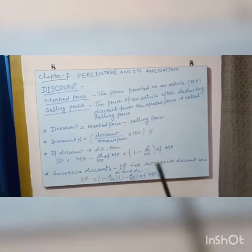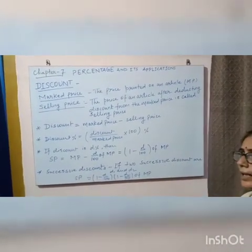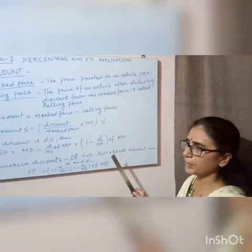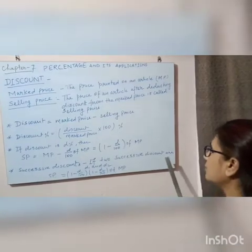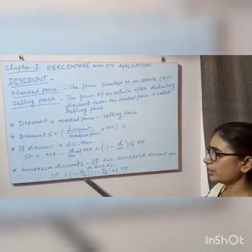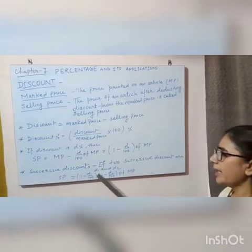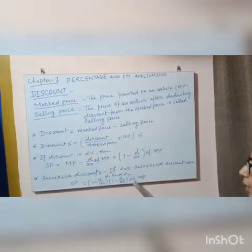Successive discount: sometimes an article is given 10% and then 20%, or 20% and 10%. If two successive discounts are D1 and D2, SP equals 1 minus D1 by 100 in one bracket, and in another bracket 1 minus D2 by 100 of MP.